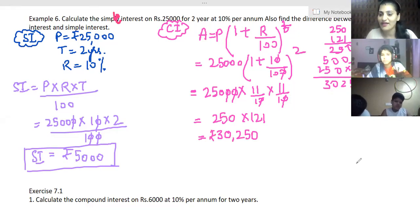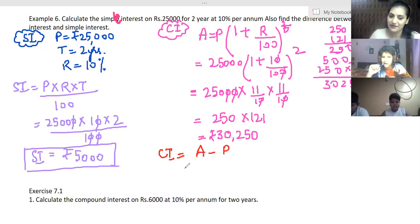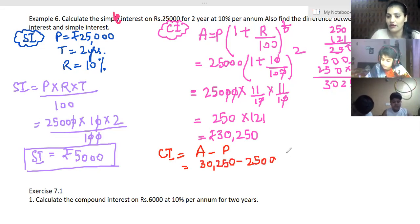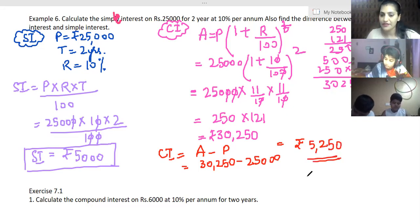Akshita, now you are going to tell me how will I calculate the compound interest now? Is it principal minus amount or amount minus principal? Yes Rita, yes - it's amount minus principal. So it is 30,250 minus 25,000. So I am going to get the compound interest as 5,250, five thousand two hundred and fifty rupees. Clear?